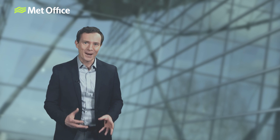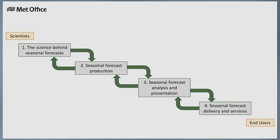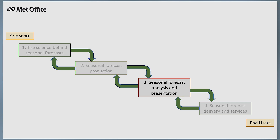In this series of short videos, scientists from the Met Office will explain the key steps of the seasonal forecast process, from the science to the services. In part one, we explain exactly what we mean by a seasonal forecast. In part two, we explain how seasonal forecasts are produced, and then in part three, how the forecast information is presented. Finally, in part four, we look at the role of different organisations in creating and communicating seasonal forecasts, providing examples of how they are successfully used in practice.